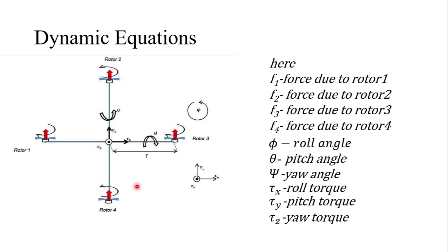Next we discuss the dynamic equations of the quadcopter. Considering the relevant figure, the variables used are: F1, F2, F3, F4 representing the force due to rotors 1 through 4; phi is the roll angle, theta is the pitch angle, psi is the yaw angle; tau_x is the roll torque, tau_y is the pitch torque, and tau_z is the yaw torque.